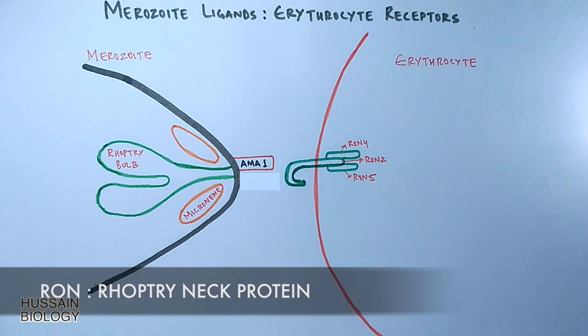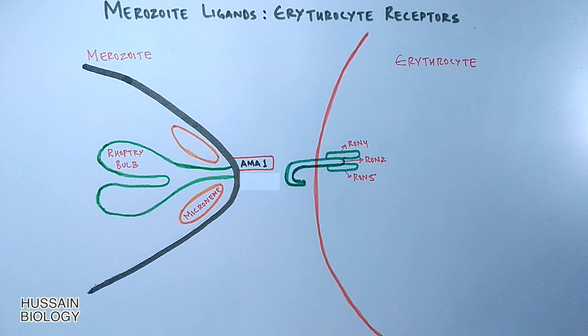These RON complexes are a bunch of proteins present inside the erythrocyte and also secrete RON peptides outside the cell which act as receptors for AMA1 protein. So we see this AMA1 from Plasmodium shows interactions with the RON receptor complex.